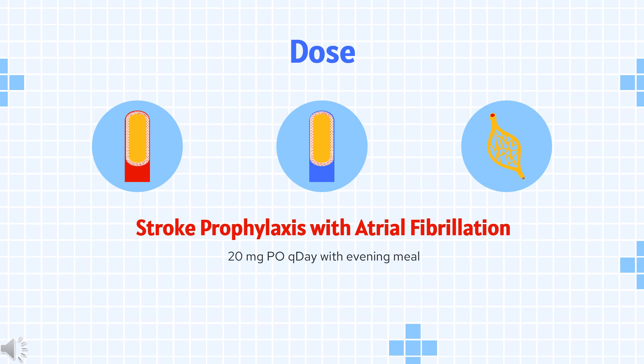Risk reduction of major thrombotic vascular events: Indicated, in combination with aspirin, to reduce the risk of major thrombotic vascular events — MI, ischemic stroke, acute limb ischemia, and major amputation of a vascular etiology — in patients with peripheral artery disease (PAD), including those who have recently undergone a lower extremity revascularization procedure. Dose: 2.5 mg orally twice daily plus aspirin 75–100 mg once daily. Initiate once hemostasis has been established. Renal considerations: no dose adjustment needed based on CRCL.